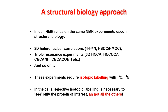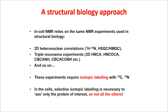In-cell NMR is still a structural biology technique — you are observing the protein, not the cell. As such, it relies on two-dimensional or higher-dimensionality NMR experiments, which often make use of isotope labeling, so that you can acquire experiments like HSQC, HMQC, or even triple resonance experiments. These experiments require isotopic labeling for two reasons: one is the classical reason that you need to enrich your protein in isotopes that have very low natural abundance, like carbon-13 and nitrogen-15. The second reason is that it gives you contrast, allowing you to observe only the protein of interest and not all other cellular components.